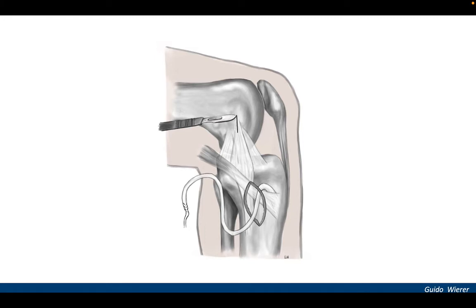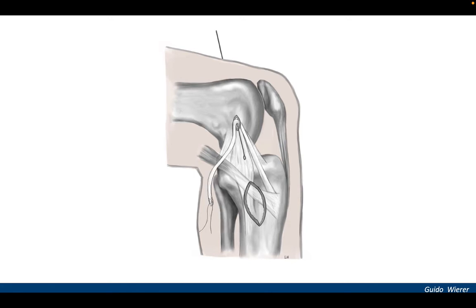A 2 cm longitudinal skin incision is made medial to the tibial tuberosity. The gracilis tendon is harvested proximally using an open tendon stripper. The tibial insertion is preserved while the free tendon end is prepared and whipstitched. An additional skin incision is made at the medial femoral epicondyle. The fascia is incised and the bone pin is drilled in the center of the femoral insertion of the superficial MCL.